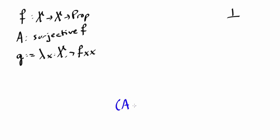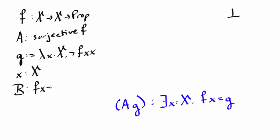Now if we look at A applied to g, the type of this is there exists an x in X so that f of x equals g. So this proof term justifies adding two new assumptions: an x of type X and an assumption that f of this x equals g. So let's do that here. x has type X and now I have an assumed proof B of f of x equals g. Now I still need to prove false. How can I prove this?